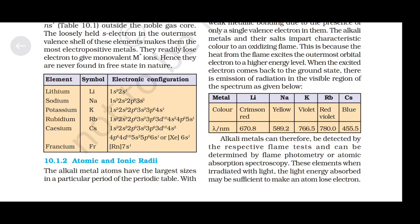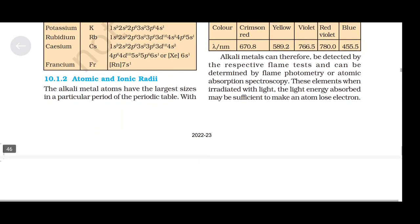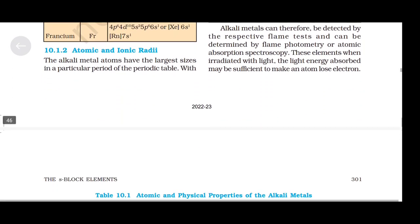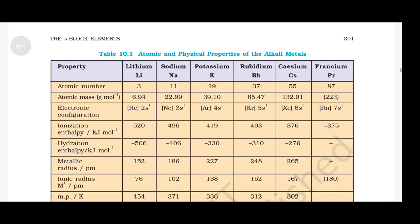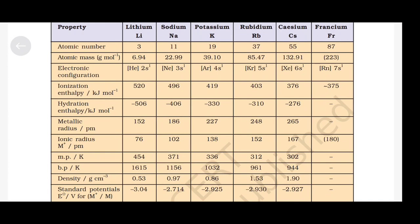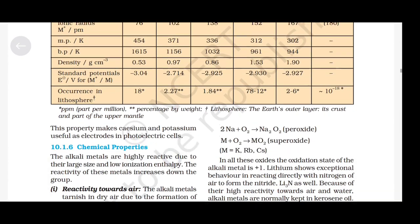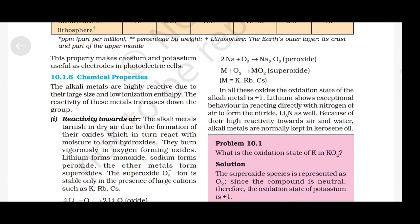These elements, when irradiated with light, may absorb sufficient energy to lose an electron. You can refer to the table for atomic and physical properties of alkali metals. This property makes caesium and potassium useful as electrodes in photoelectric cells.